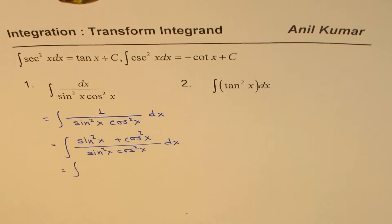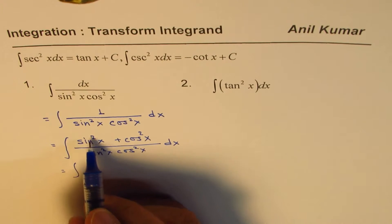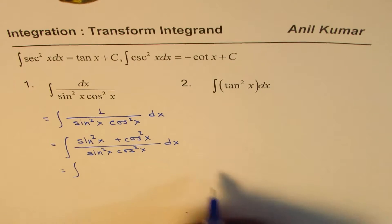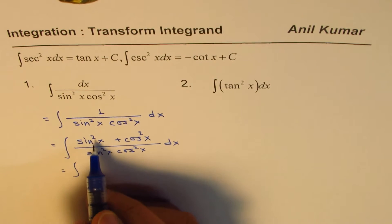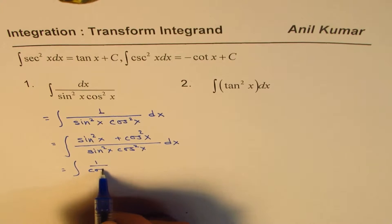You could write them as two fractions. So the first one, sin square x, sin square x cancels. You could write this as one over cos square x.